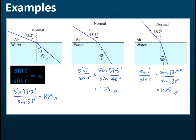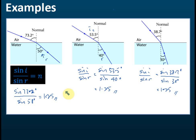So sine i over sine r is equal to a constant. This constant — 1.25 — is labeled using the letter n and it's called the refractive index. This 1.25 is the refractive index, as stated in Snell's law: sine i over sine r equals a constant, meaning they are always the same.